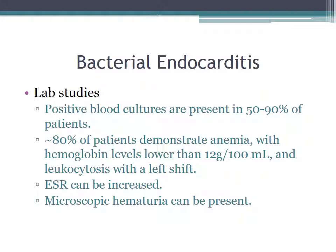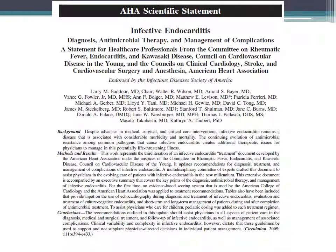Turning to laboratory abnormalities: positive blood cultures are present in 50% to 90% of patients, with the lower percentage seen when patients are pre-treated with antibiotics. About 80% of patients demonstrate anemia with hemoglobin levels lower than 12 grams per 100 milliliters. Leukocytosis with a left shift can be seen as well. ESR can be increased, and microscopic hematuria may also be present.